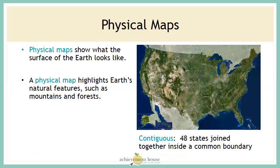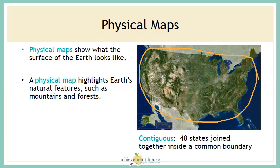Today we're going to be looking at a lot of physical maps. Remember, a physical map shows what the surface of the Earth looks like — it highlights features such as mountains and forests. We'll be looking at maps of the United States that feature the contiguous 48 states. The word contiguous means joined together inside a common boundary, so it refers to the states that are connected on the mainland. Alaska and Hawaii are not part of the 48 contiguous states.